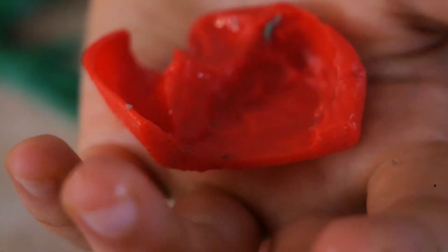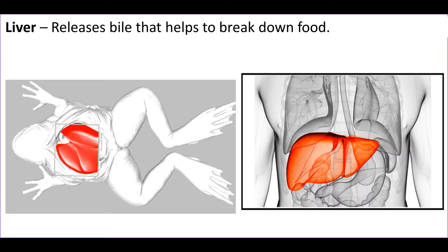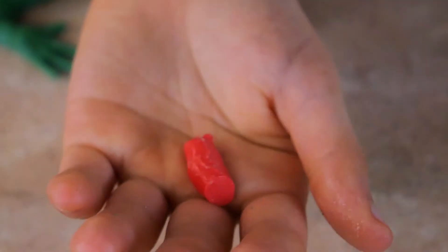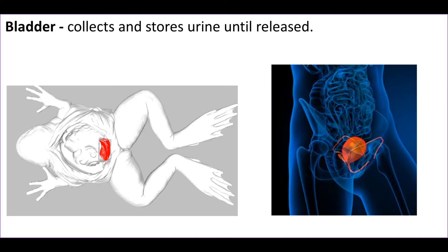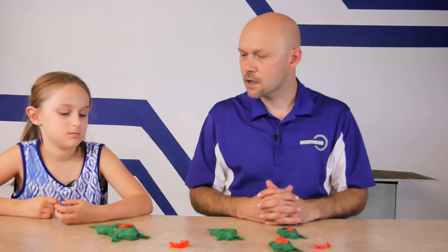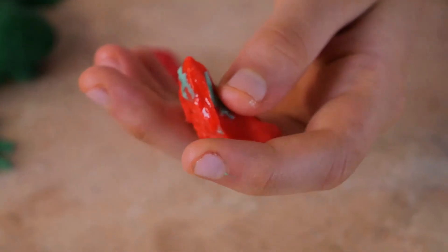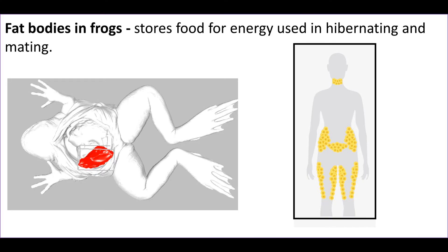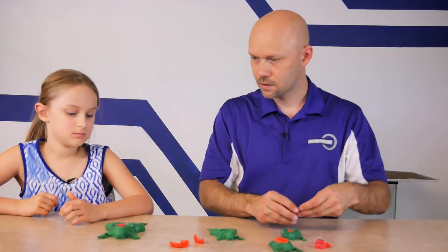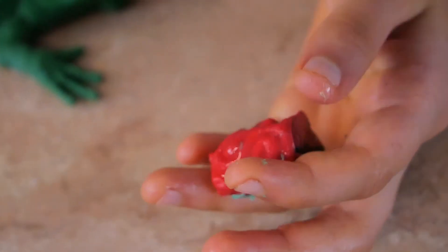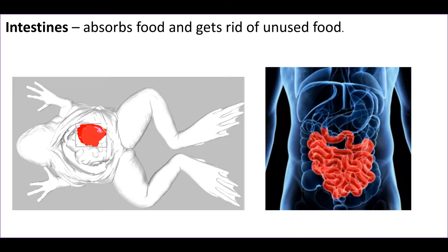The first piece is the liver. The liver releases bile that helps to break down food in a frog, just like it does in your body. Next is the bladder — just like in our bodies, the frog's bladder collects and stores urine until it's ready to be released. Then we have the fat bodies — in frogs these store food energy used during hibernation and mating. In our bodies, we store fat in cells throughout the body and underneath our skin. This large piece is the intestines — the small and large intestines — which absorb food and get rid of unused food, just like in our bodies.